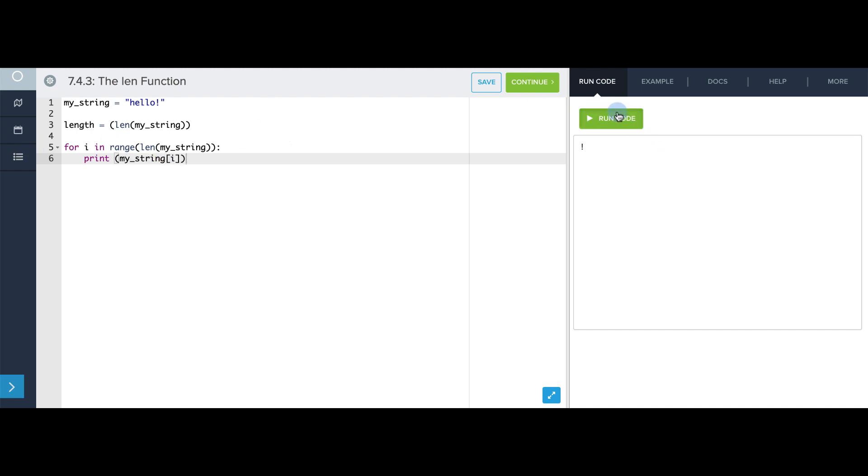So this will print my_string at 0, and then my_string at 1, etc. And I can also just use the variable length here, since its value is already the length of the string. And that works too.